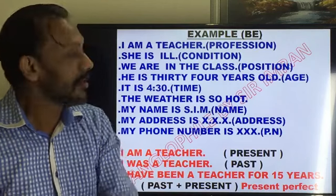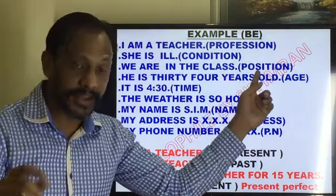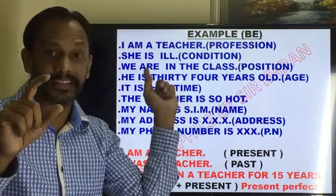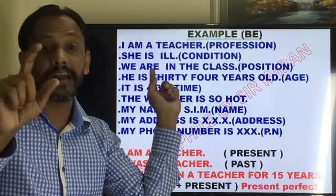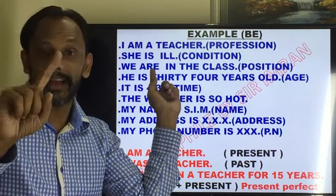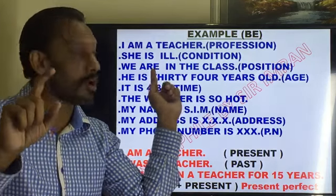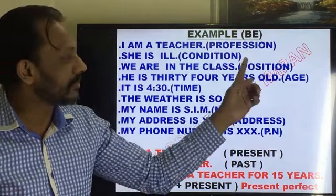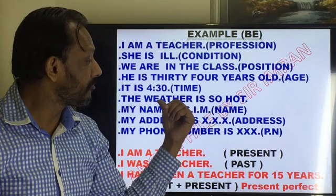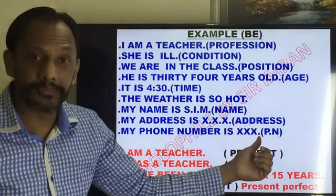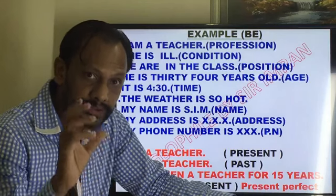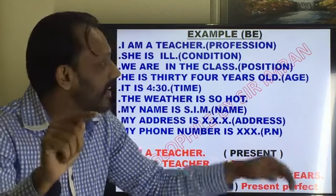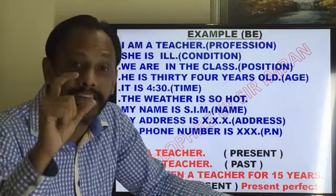Whenever we talk about profession, condition, position, age, time, weather, name, address, or phone number — we use the word be. Be means is/am/are. You must remember: this be is not a helping verb, it is a state verb. 'He is 34 years old' — here we are talking about age, so we use be. 'It is 4:30' — 4:30 is time, so we use be. 'The weather is so hot' — for weather, we use be. 'My name is Sir Imran Murtaza' — when we talk about our name, we use be.